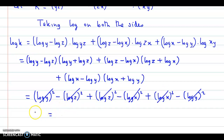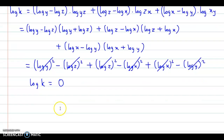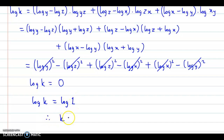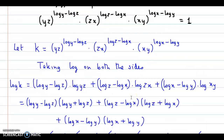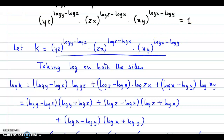So basically we have log k equal to zero, and we know that zero is nothing but log of 1. So log k equals log 1, therefore k equals 1. And k was assumed to be the left hand side, so the left hand side value is 1, which equals the right hand side. Hence proved.